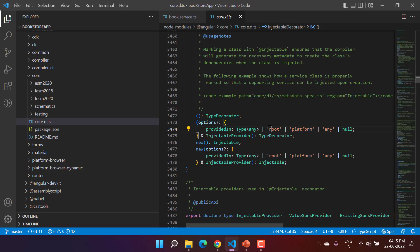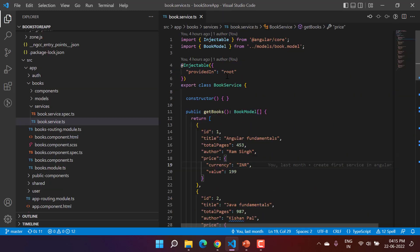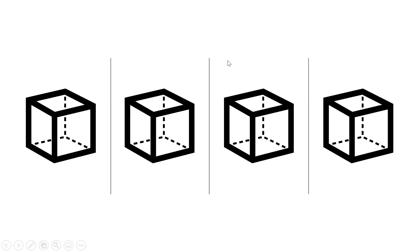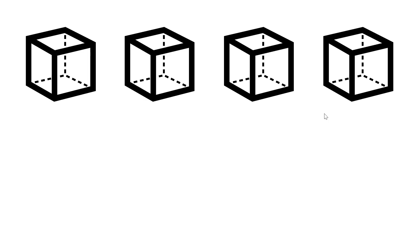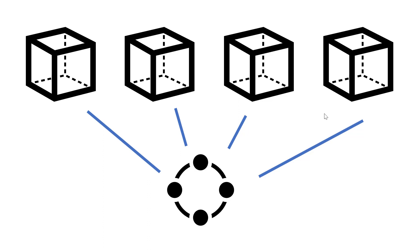We are currently using the 'root' value in the 'providedIn' property, but what will happen if we want to use something else? In this video, we will talk about 'root' and 'any' and the difference between them. Let's assume we have an Angular application with four modules — Module 1, 2, 3, and 4 — each having one component, along with one shared service used by all these components.